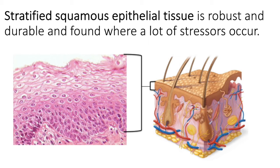Other stressors include chemical stressors like UV light. We find this tissue where a lot of stress is experienced — starting with the skin, your epidermis, which experiences many stressors. That tissue is keratinized, which we'll cover when we discuss the integumentary system. We also find this tissue lining the mouth, the esophagus, the rectum, and the vagina — wherever there's a lot of mechanical stress.